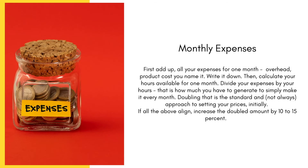There are a couple of ways to figure out pricing points for your services. Let's begin with monthly expenses. First, add up all your expenses for one month — overhead, product costs, everything. Write it down. Then calculate your hours available for the month and divide the expense by your hours. That is how much you have to generate to simply make it every month. Doubling that is the standard, though not always the initial approach. If all the things above align, increase the doubled amount by 10 to 15%, and then you can start breaking down your services into a pricing point that works best for you.